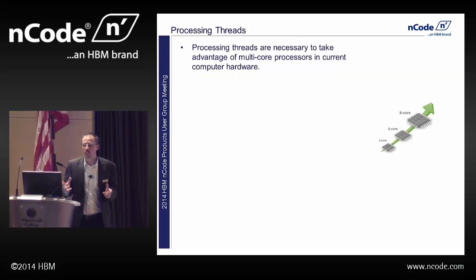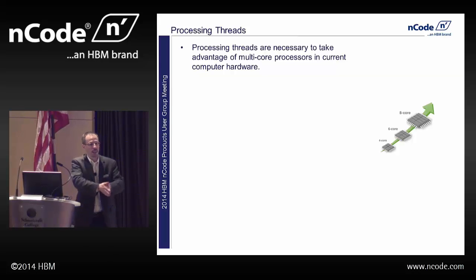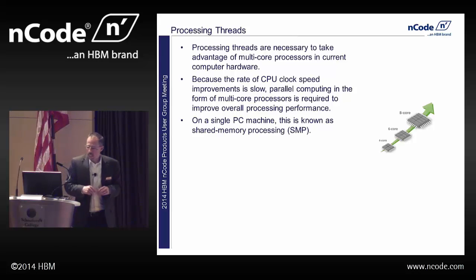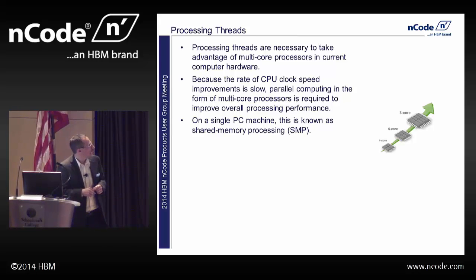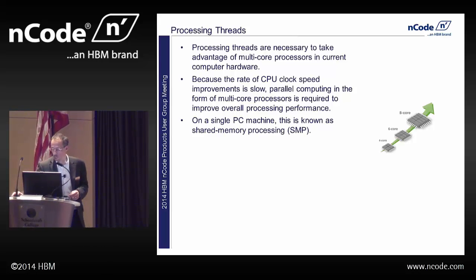First, we can use more processing threads. Processing threads are what you need to take advantage of the fact that your computers are multi-core. A few years ago they reached the point where they couldn't make a single core go any faster, so they put multiple cores on a single chip — four-core machines, eight-core machines — where each one acts like a separate processor. On a PC, this is known as shared memory processing: multiple processors all sharing the same core memory on one machine.